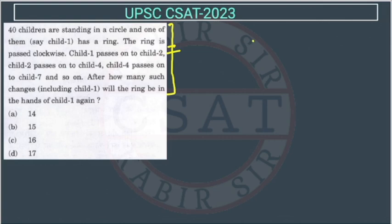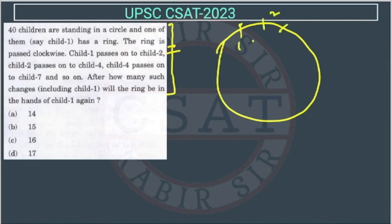So what is happening? There are 40 children. So there's a circle and in this there are 40 children. Suppose this is the first child, and this is second, this is third, this is fourth. In this way, total there are 40. So this is 40th.